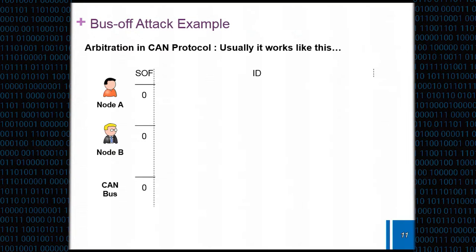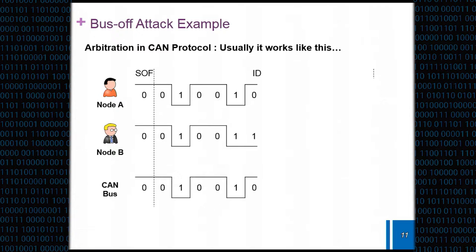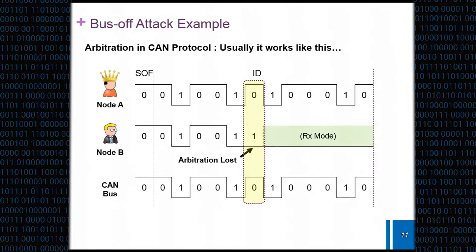We'll look in a bit more detail on how this is performed. Usually, in the arbitration phase that I mentioned before, this phase is for resolving contention. If node A and B had to send a message at the same time, during that phase, whenever a node sees an opposite bit on the bus compared to what it had transmitted, it acknowledges that someone else who has higher priority is sending on the bus. After it loses arbitration, it switches to receive mode and just lets the high priority message be sent on the bus.